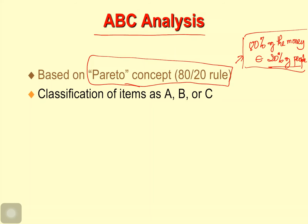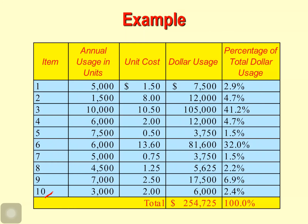Look at this example — this company has 10 items. The first column is the annual usage in units; for the first item they use 5,000 units per year. Then we have the unit cost and the total money spent on those products. After that, we calculate the percentage of total dollar usage — for example, 7,500 divided by the total — so you can see the percentage.